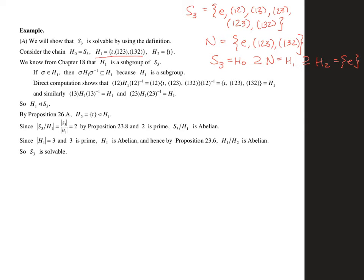We have already shown that H1 is normal, but this direct computation piece shows us that as well. Another way to show this that I prefer to what's in the notes is just to check that sigma H equals H sigma for all sigma in S3, which is saying the left and right cosets are the same. But here's where we get to use some counting in a nice way.